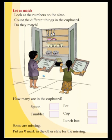Now let's count how many are in the cupboard. We see 3 spoons, 2 cups, 5 tumblers, 2 lunch boxes, and 1 pot. That means some are missing. Put a cross mark on the slides for the missing items.